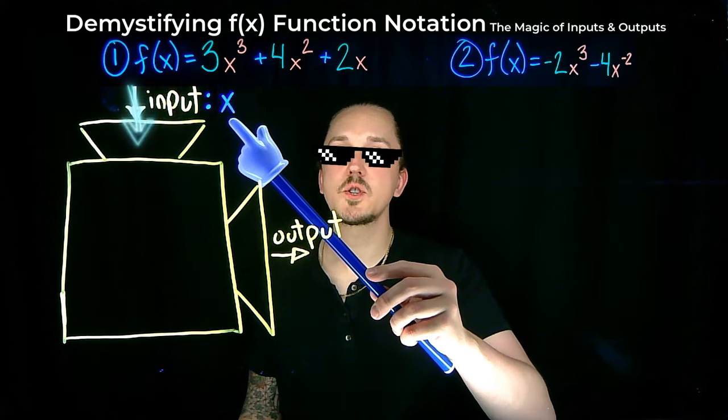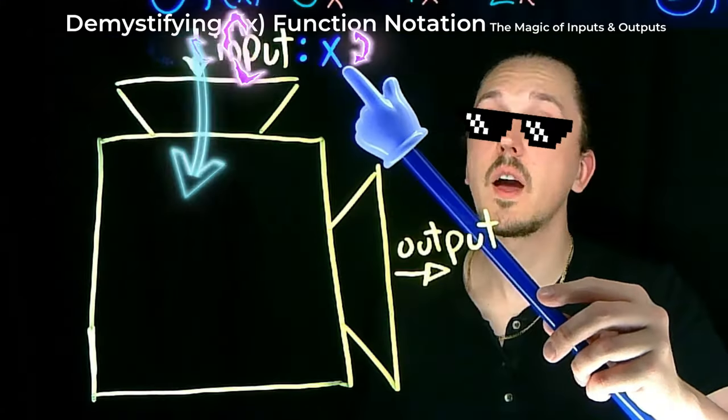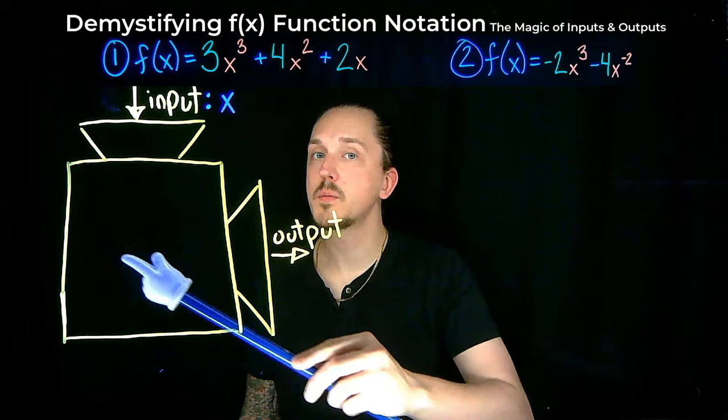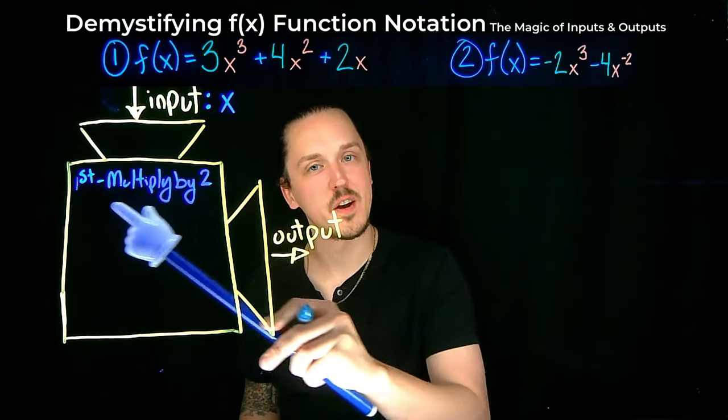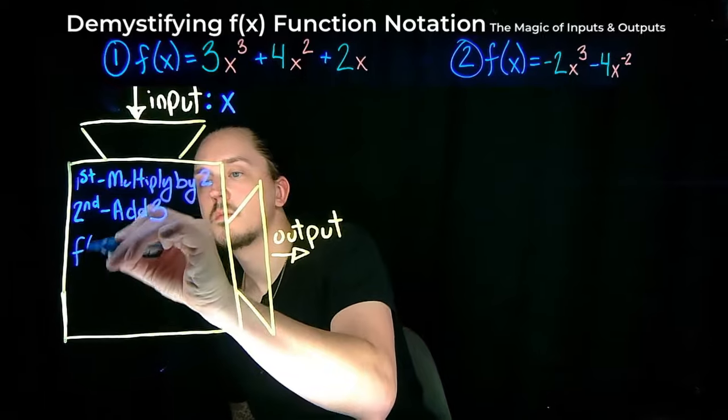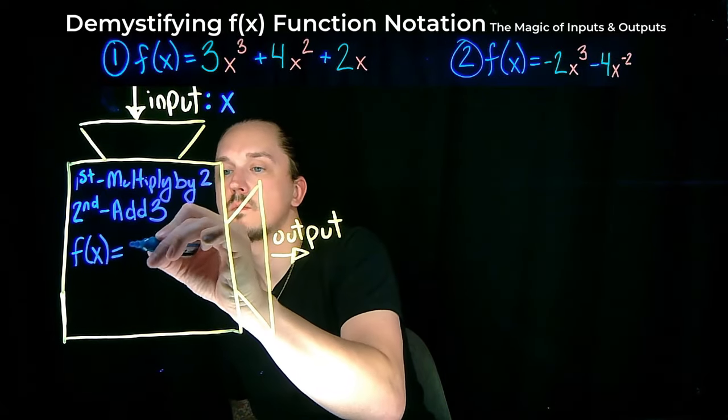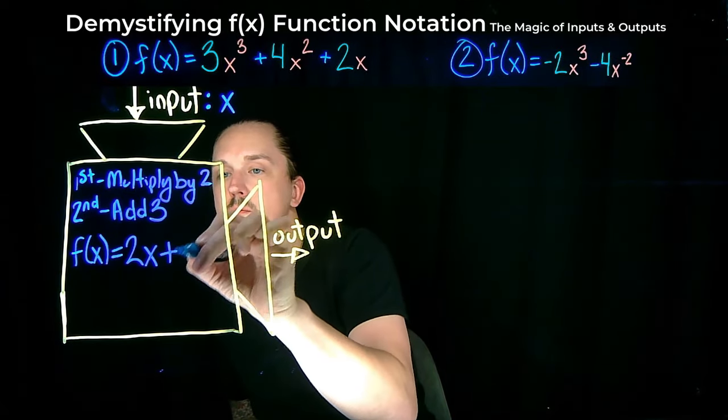For example, let's say this machine takes an input of a number, x. The machine then multiplies that number by two and then adds three to the number. Now in math terms, this machine's instructions can be written as f of x equals two x plus three.